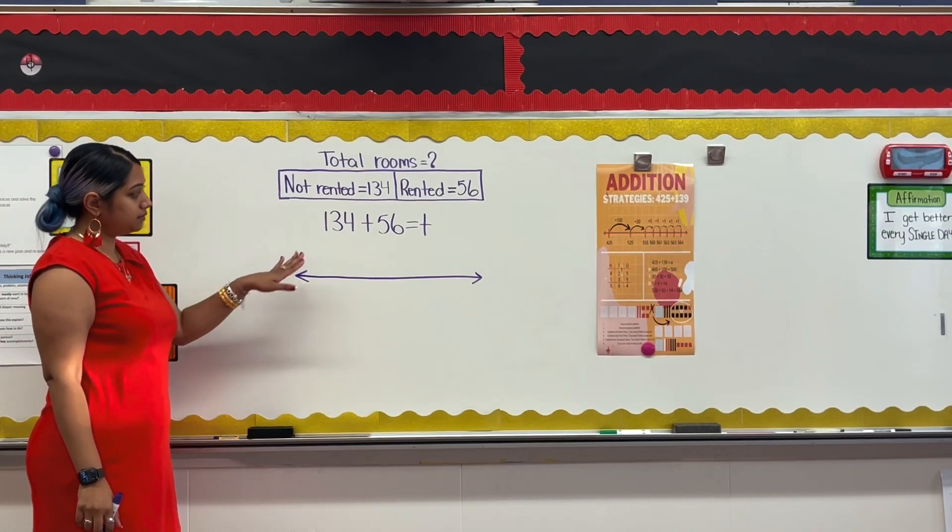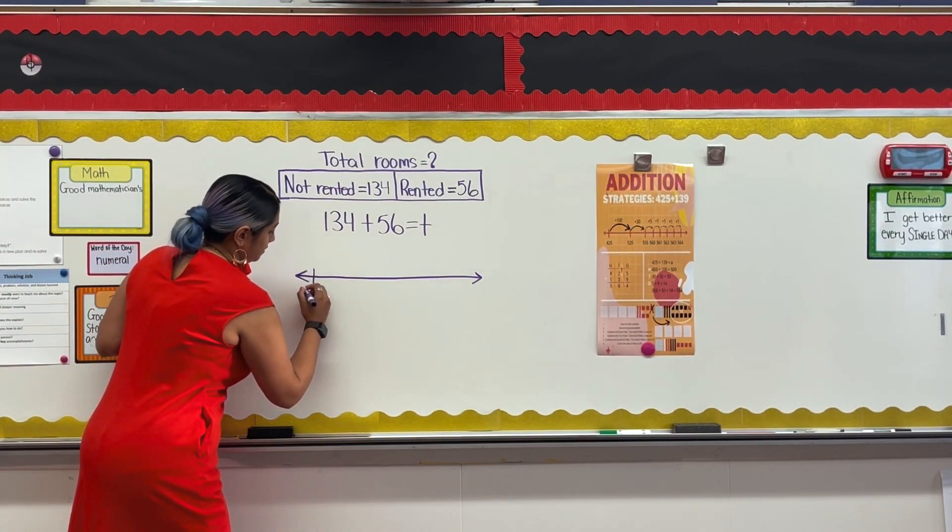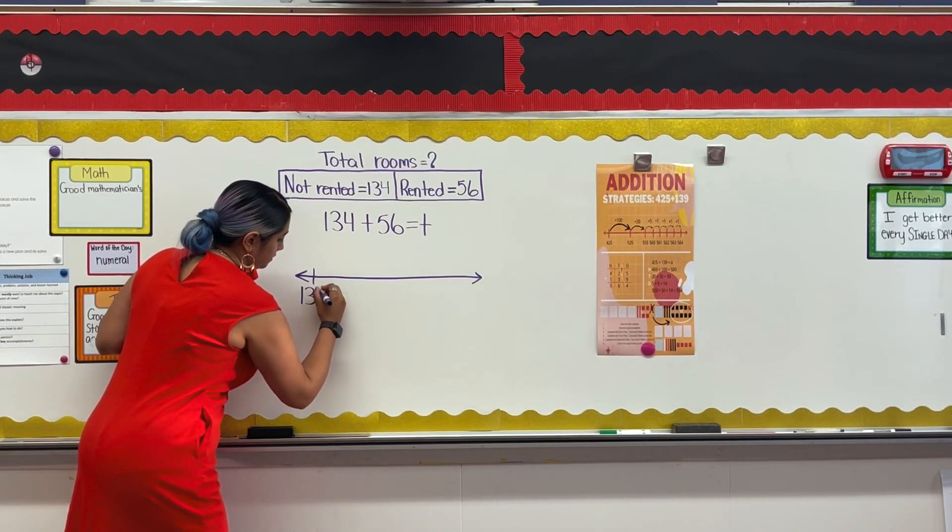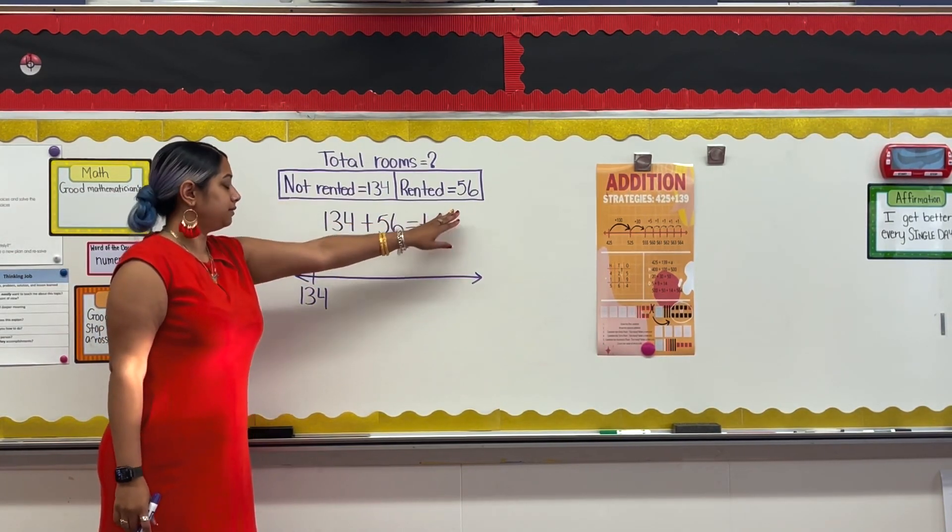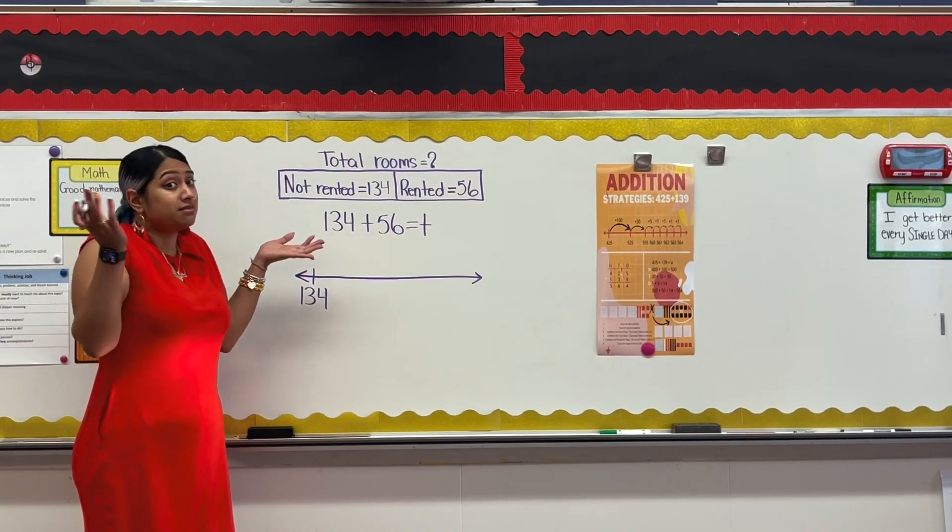This time, however, I'm going to represent my thinking on the number line. We'll draw an open number line and start by placing the largest of my addends on the number line, which is 134. Now I have to add 56 to this number.